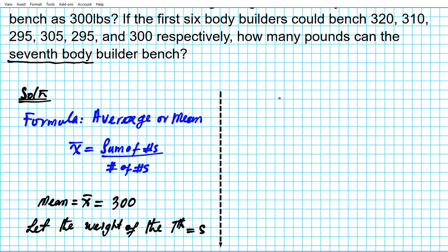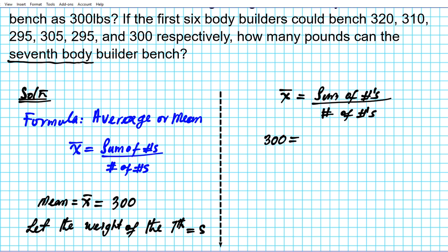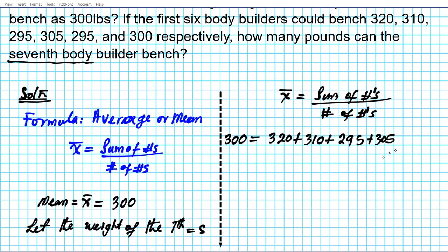Still using the formula: average equals sum of numbers divided by the number of numbers. Substituting, the average is 300, and the sum of numbers is 320 plus 310 plus 295 plus 305 plus 295 plus 300.